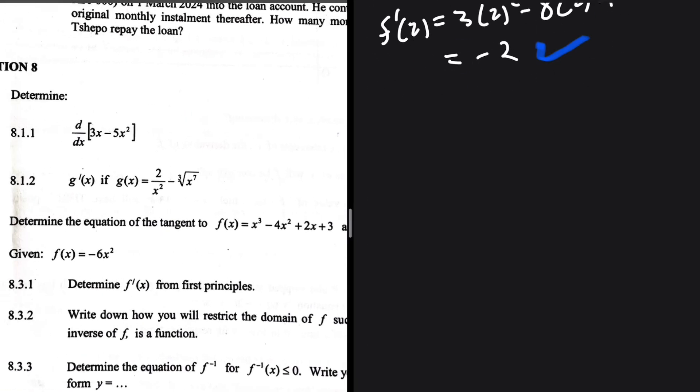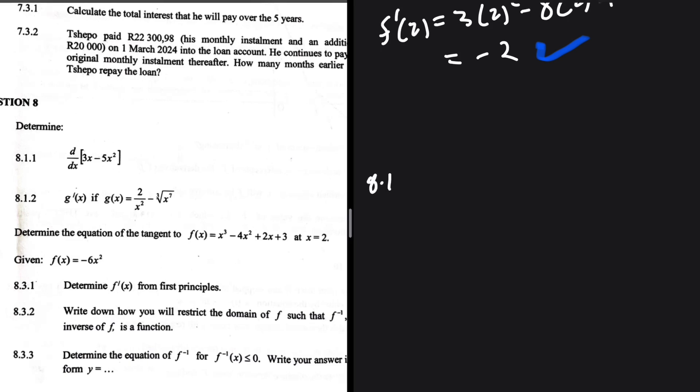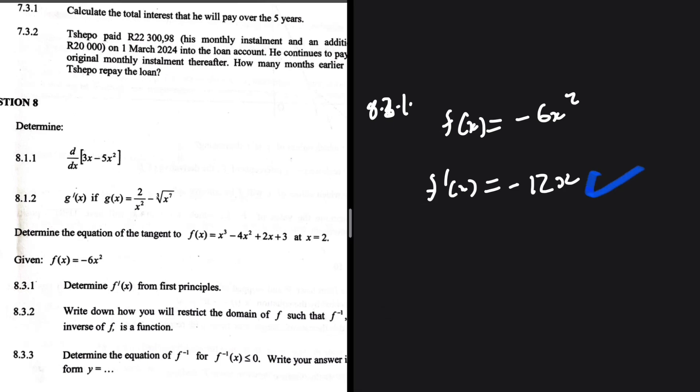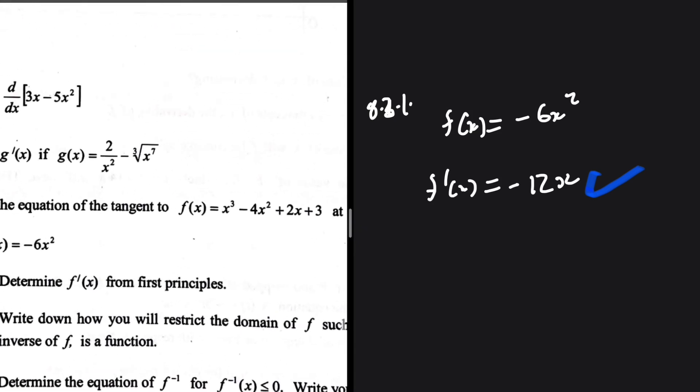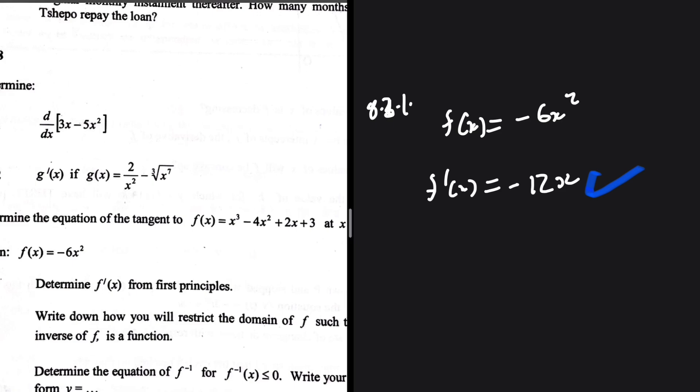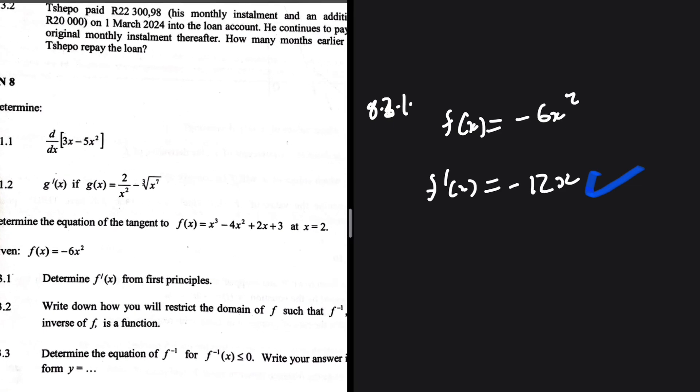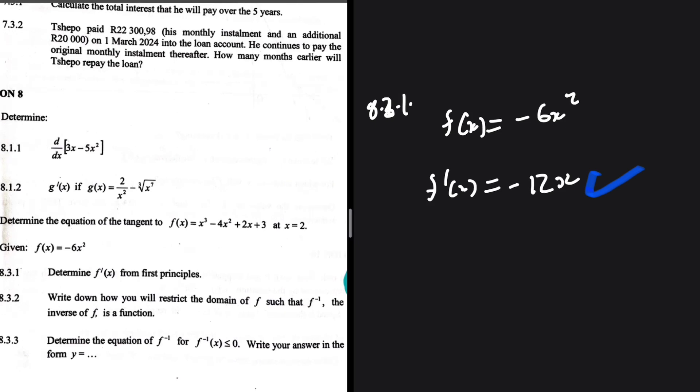And then 8.3.1, we're supposed to find f prime of x using first principles. If f of x is equal to minus 6x squared. So I'm not going to do this one just for the sake of time. But ultimately, the answer we should get, f prime of x is equal to minus 12x. This will be f prime of x. But you're supposed to use the first principles. You can see the marker location is 5. Easy marks, really. Free marks. The marker location is 5. But you're supposed to use the power rule. You're not supposed to. You're supposed to use first principle, not the power rule.